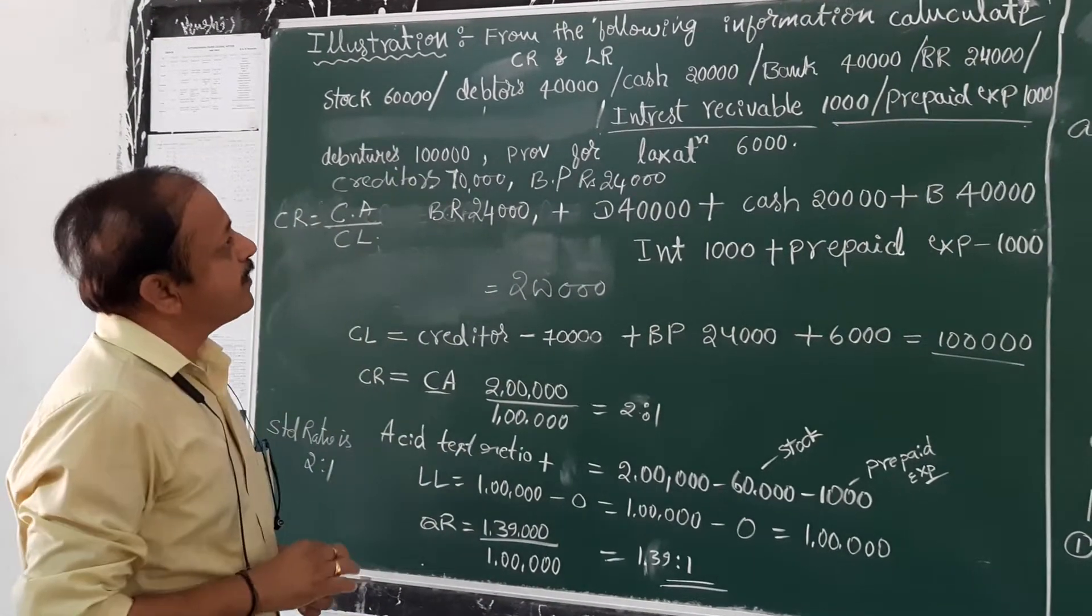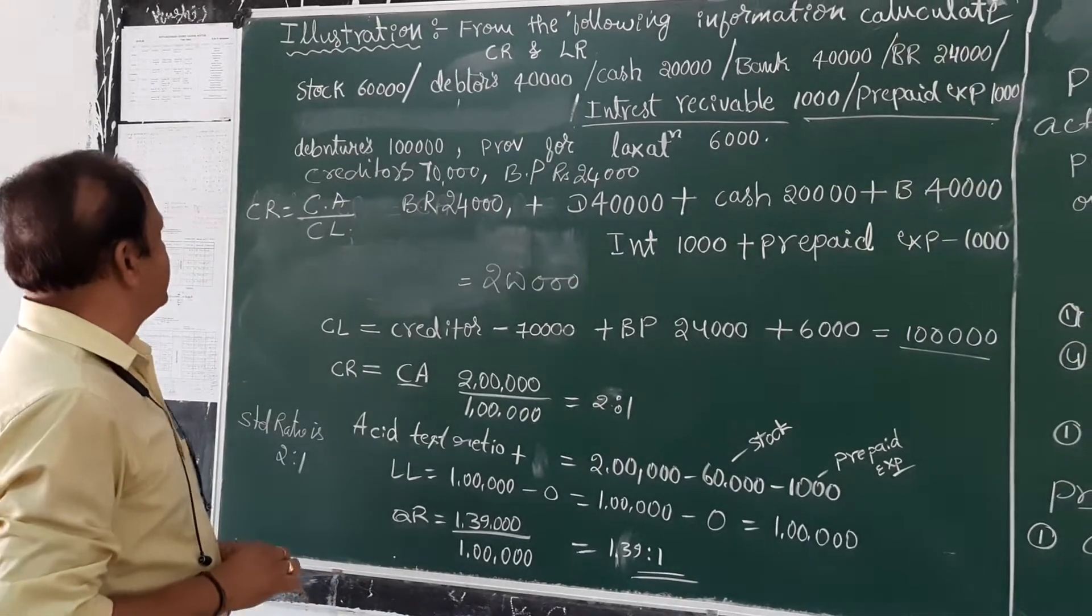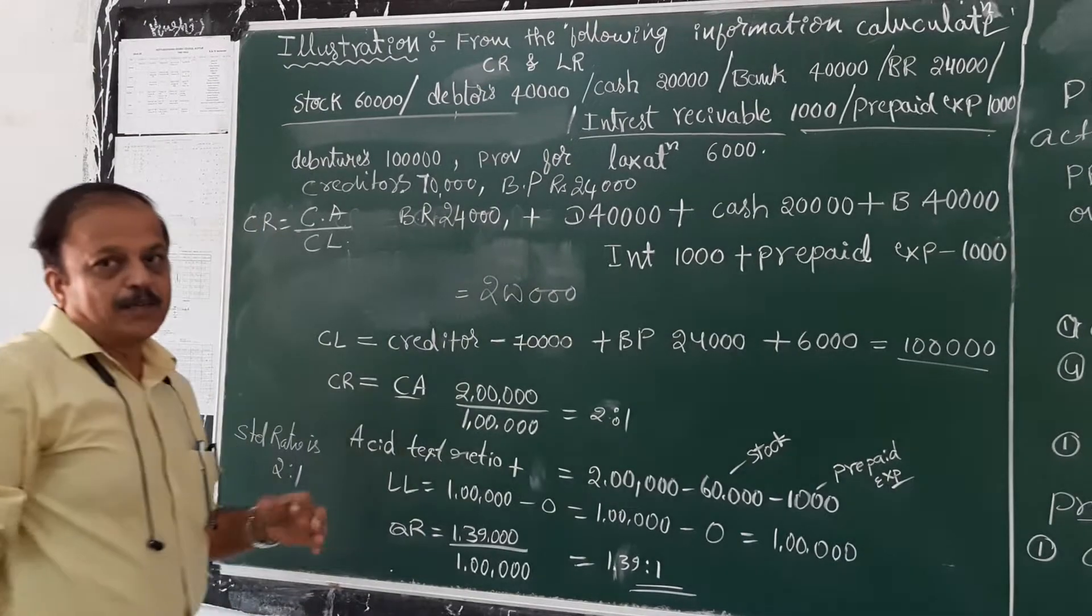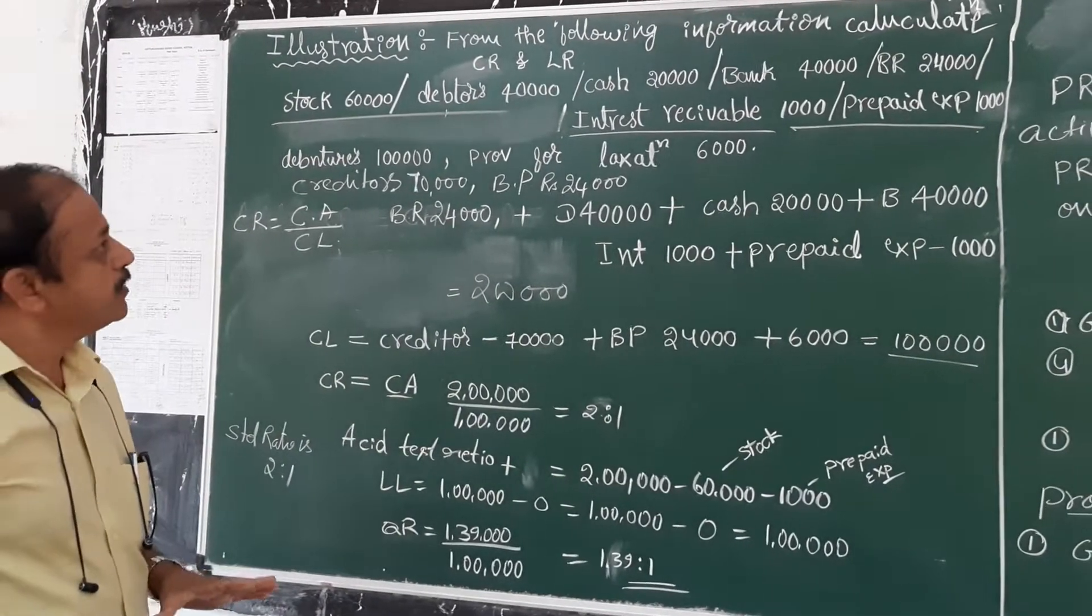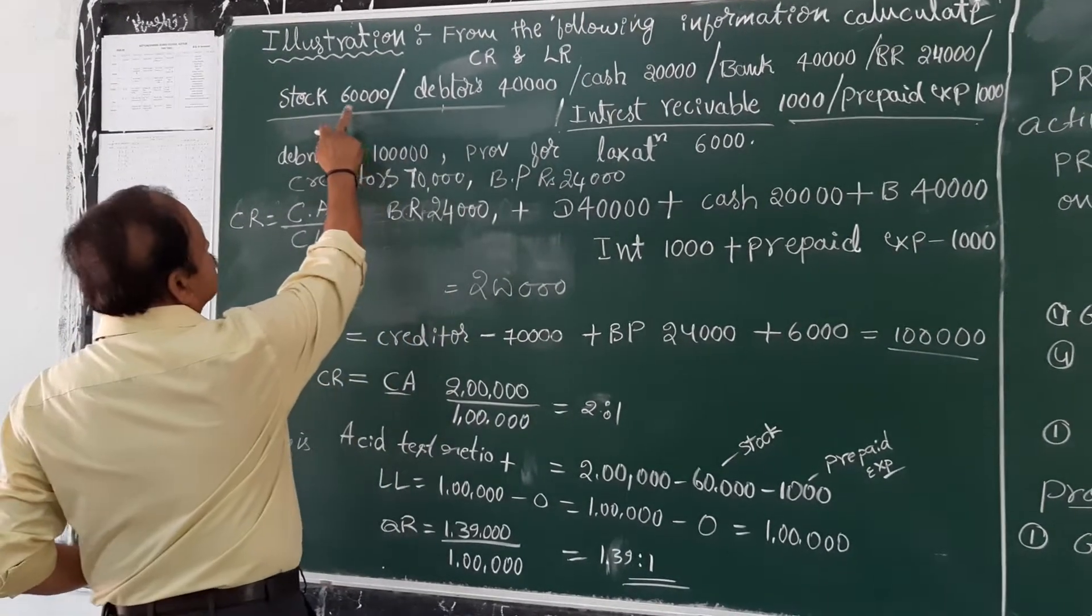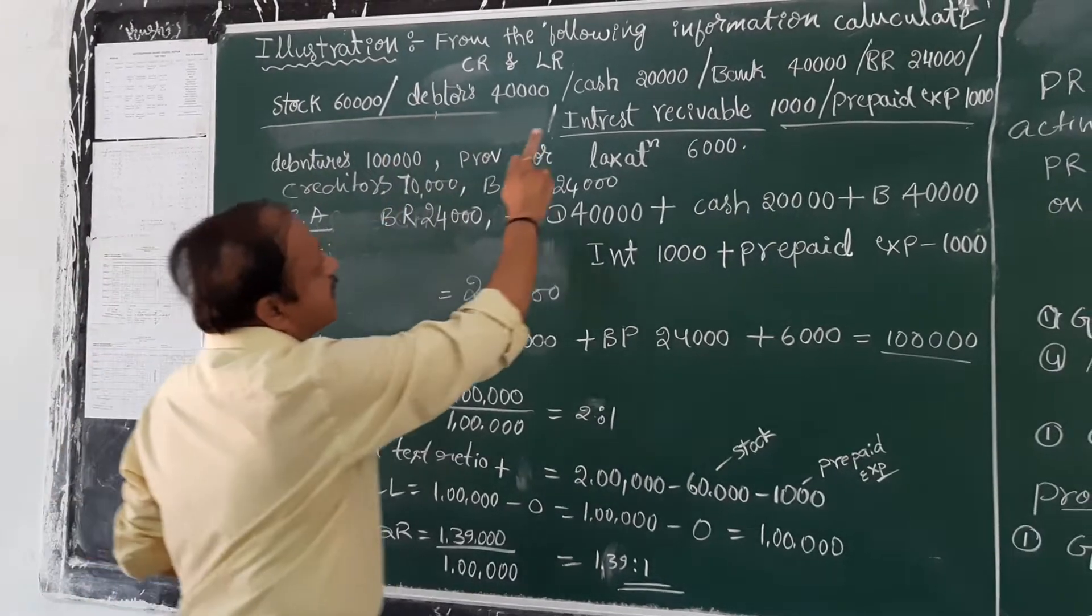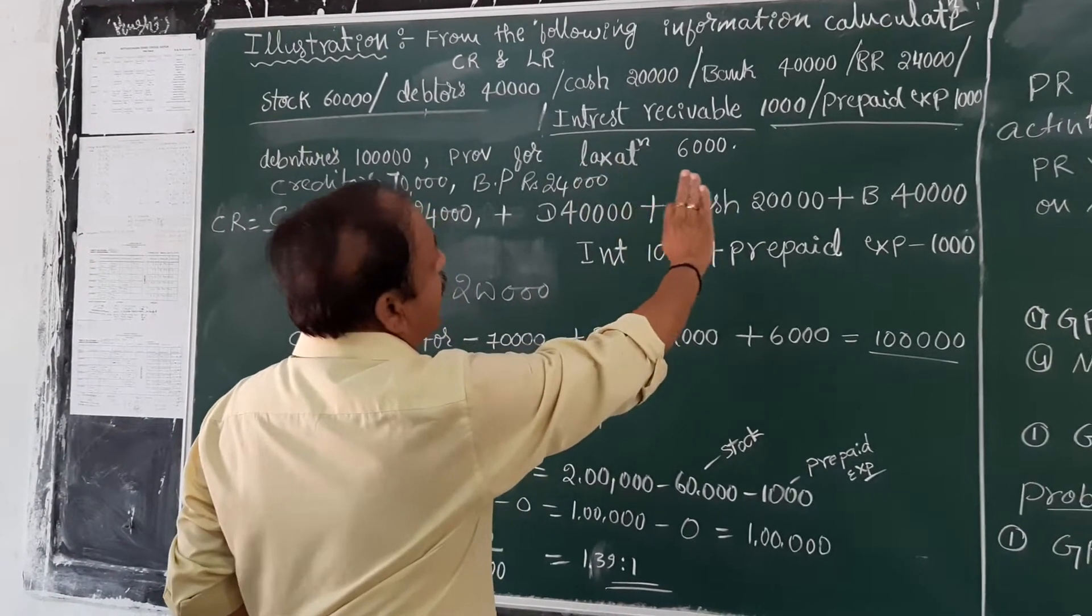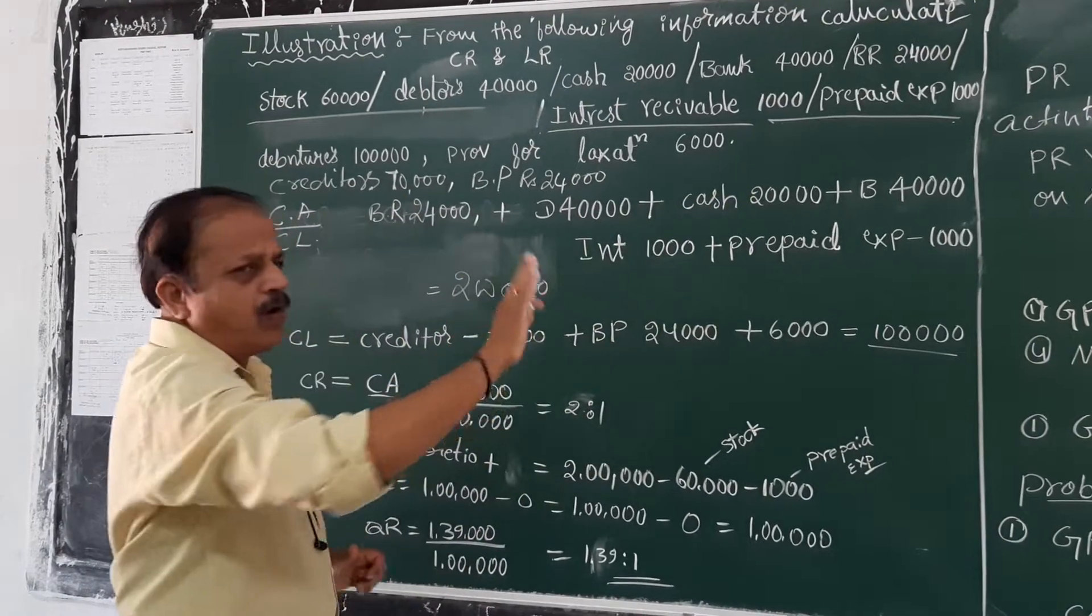From the following information, calculate current ratio and liquid ratio. These are the current assets and current liabilities of the organization. Please watch carefully. Stock, debtors, cash, bank, bills receivable, interest receivable and prepaid expenses - they are all current assets.